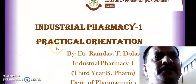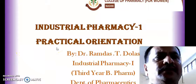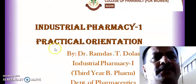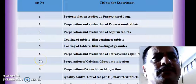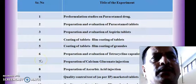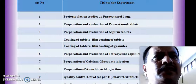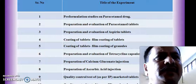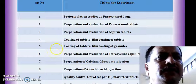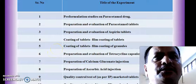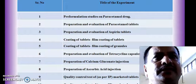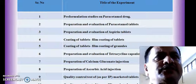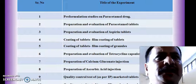As per the Pharmacy Council of India, Industrial Pharmacy 1 practical subject is given a special code, that is BP506P.